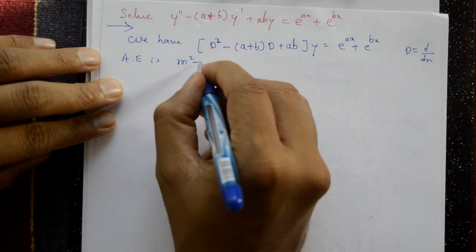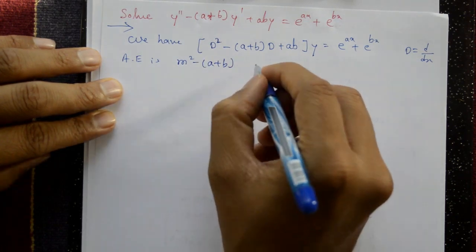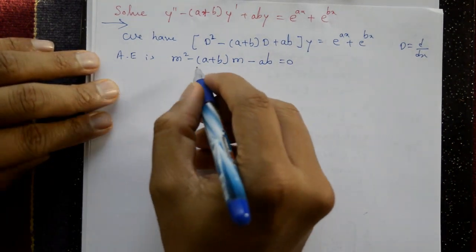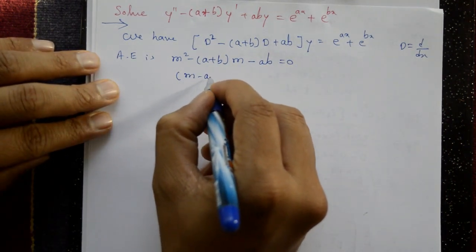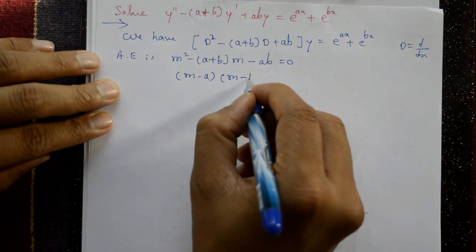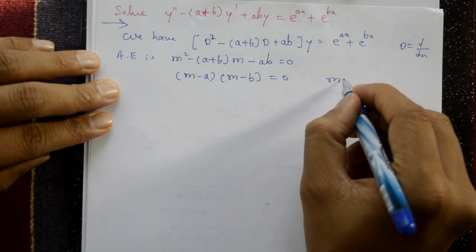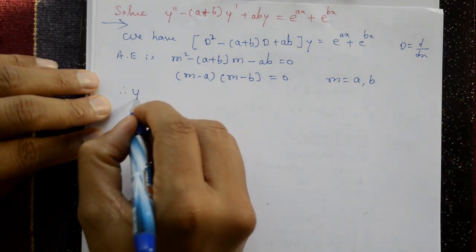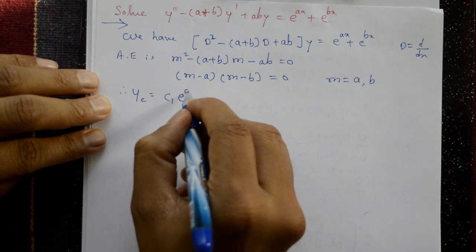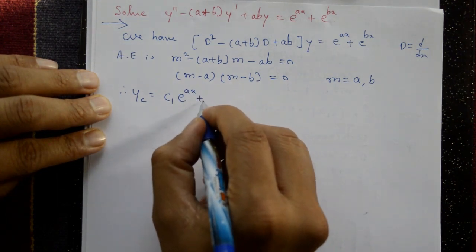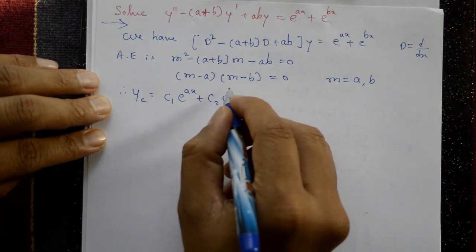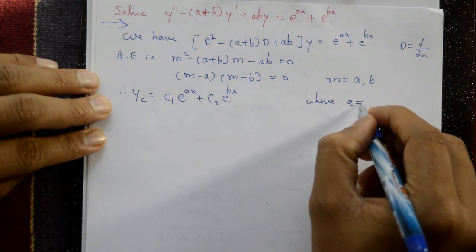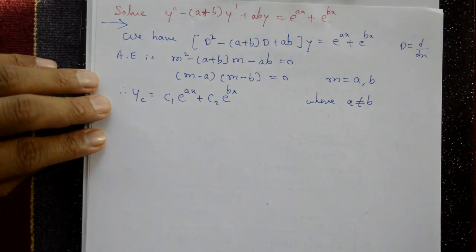The auxiliary equation is m² - (a+b)m + ab = 0, factoring as (m-a)(m-b) = 0, so m = a and m = b. The complementary function is yc = c₁e^(ax) + c₂e^(bx), where a ≠ b.